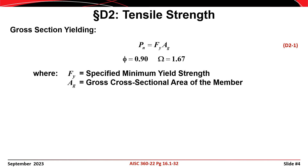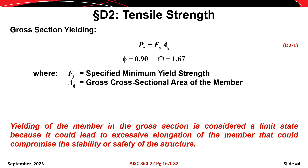If allowable stress design is being used, then the allowable strength Pn over omega is calculated by dividing the nominal strength Pn by the safety factor omega equals 1.67, or 5/3. Yielding in the member on the gross section is considered a limit state because it could lead to excessive elongation of the member that could compromise the stability or the safety of the structure.